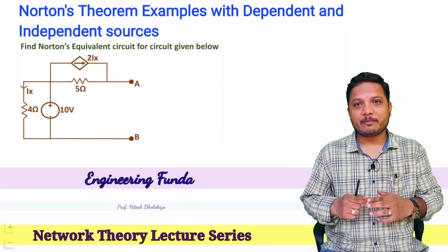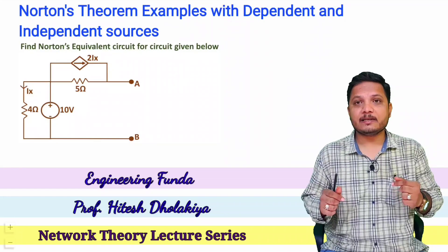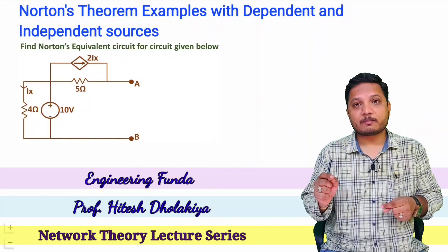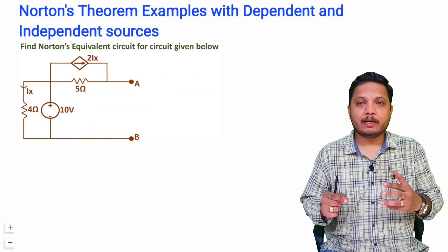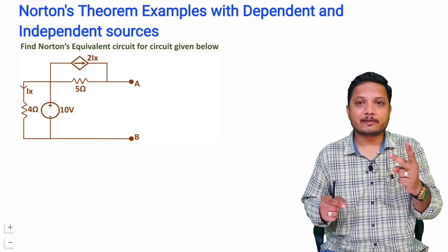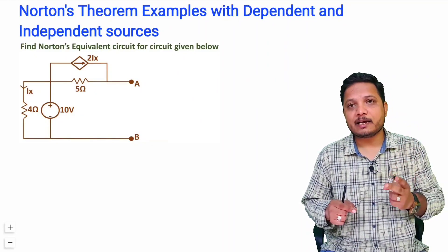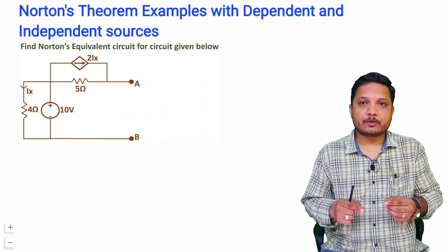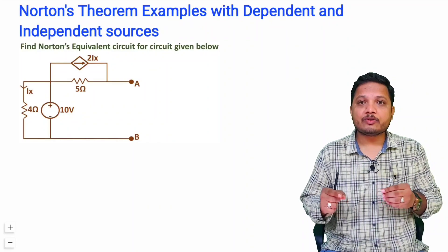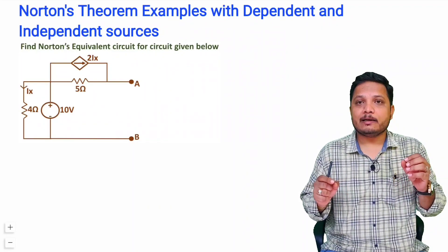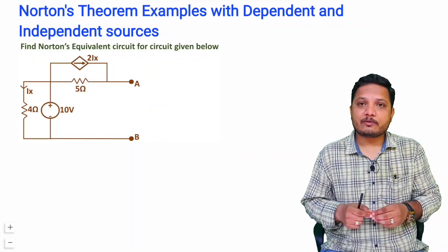Welcome to Engineering Funda family. This video is a part of the network theory lecture series. Today I'll be explaining a few interesting examples based on Norton's theorem, considering two cases: one example with dependent sources and one with independent sources. At last I'll give you one practice question — write your answer in the comment box and if any issue is there, I'll get back to you. Let us see the first question.